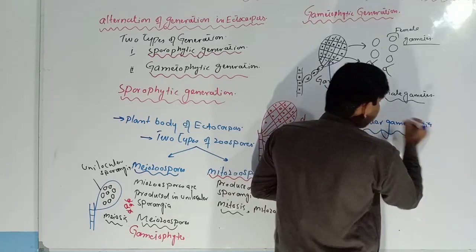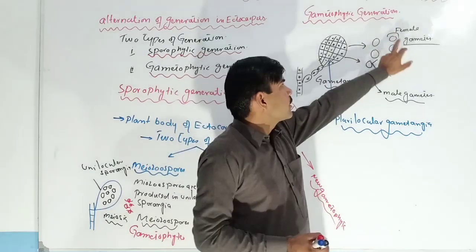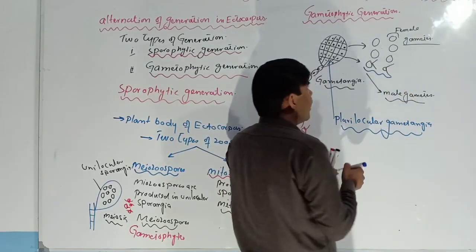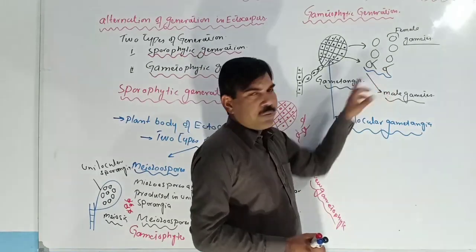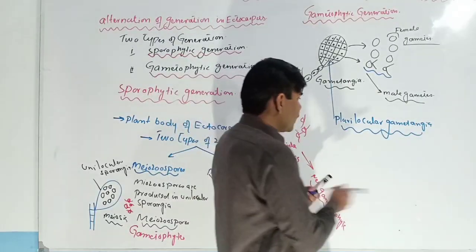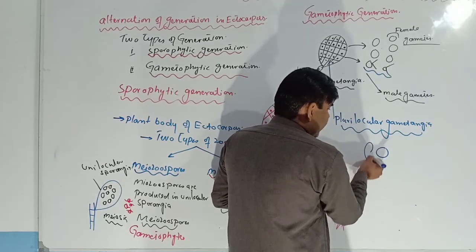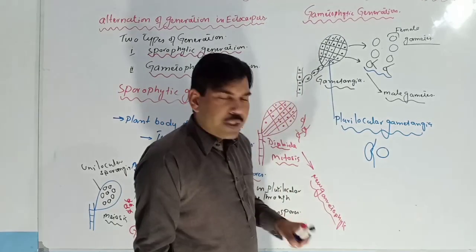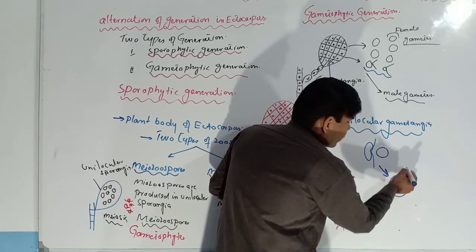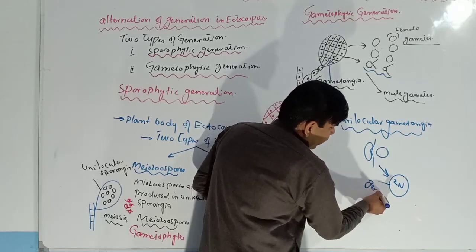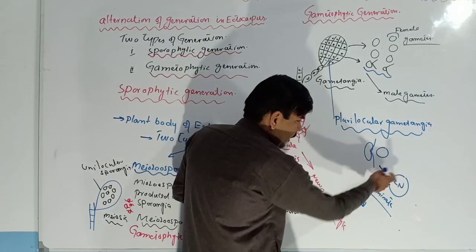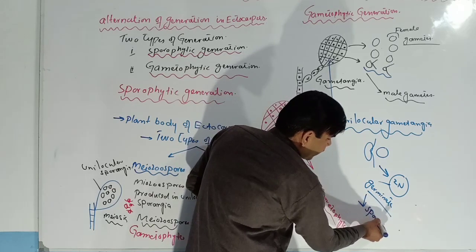The plurilocular gametangia gives rise to two types of gametes: female gametes and male gametes. The male gametes are differentiated by their flagella — both are flagellated. These male and female gametes come close to each other and fuse. When they fuse, a diploid zygote is produced. This zygote then germinates to produce a new sporophyte.